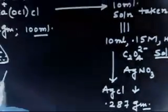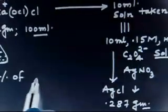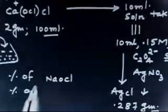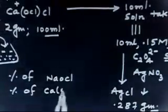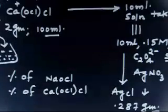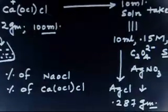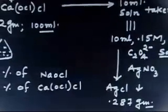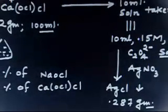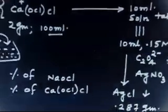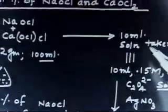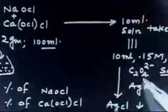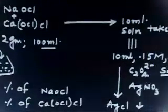We have to calculate the percentage of NaOCl and percentage of CaOCl₂. In the taken solution we have NaOCl and CaOCl₂, and this requires C₂O₄²⁻ for the end point of titration.